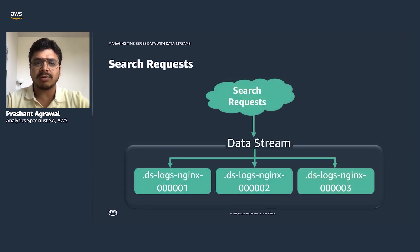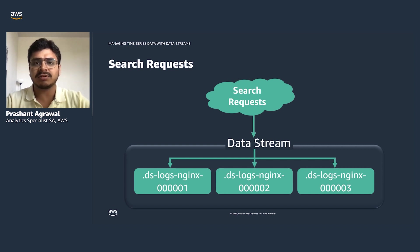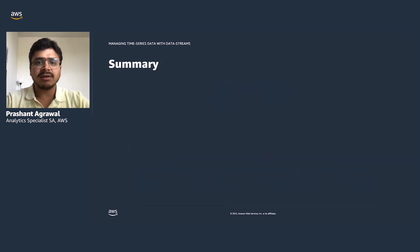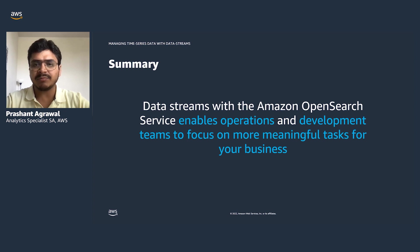For search requests, the data stream routes those requests to all backing indices. You can also filter data by timestamp to intelligently search those datasets. When you send a search request to the data stream name, it routes your query to all backing indices such as .ds-logs-nginx-00001, 2, and 3. In a nutshell, data streams help you intelligently manage time series data so that developer or operations teams can focus on development and growing their business, rather than spending time on management tasks like managing those indices or datasets.